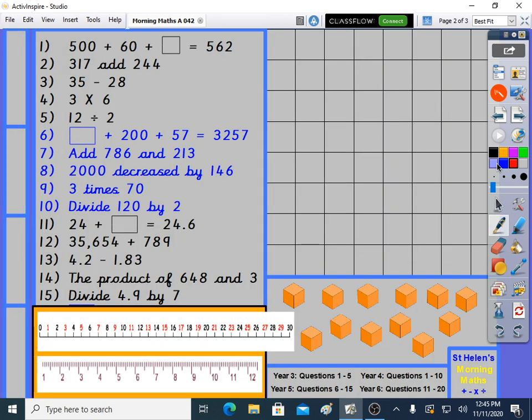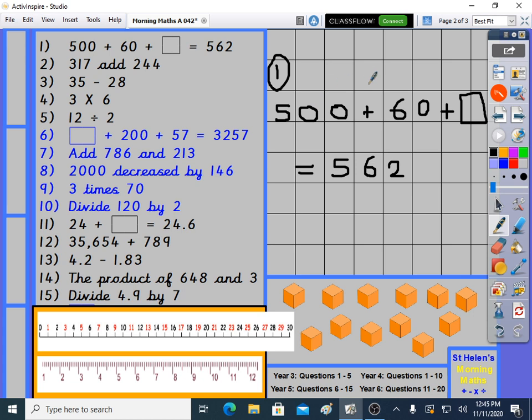Here's your three level question one. 500 plus 60, that's 560 isn't it? Plus something equals 562. So in the question up here we've got 560, we just haven't got the 2. In the 562 so the 2 is missing. That's what goes in the missing box, in the mystery box, 2.